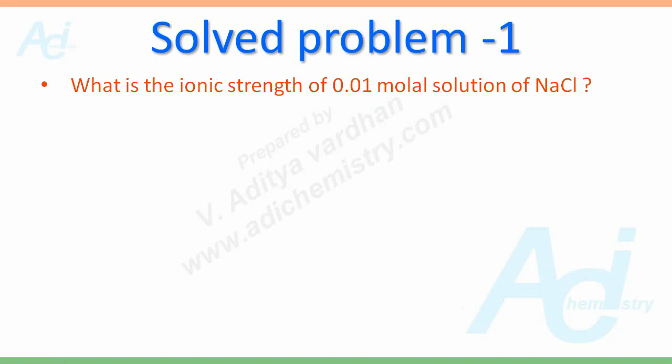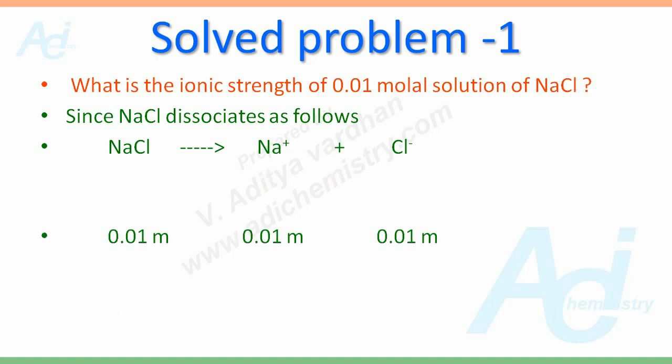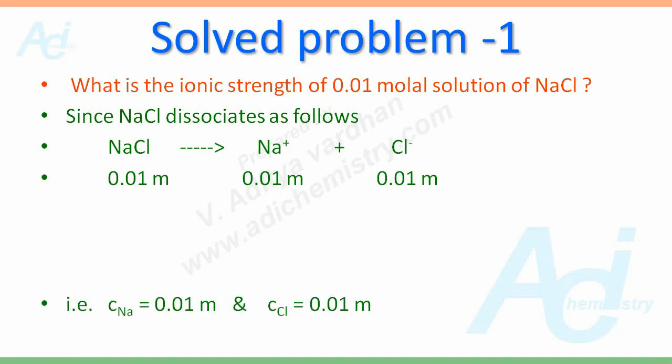First one is, what is the ionic strength of 0.01 molal solution of NaCl? We know NaCl dissociates as follows. It completely dissociates into Na plus and Cl minus ions. As the concentration of NaCl is 0.01 molal, after dissociation we will get 0.01 molal Na plus and 0.01 molal Cl minus.